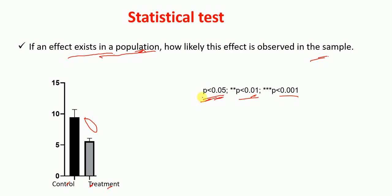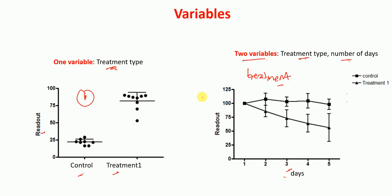Next I'm going to talk about variables. There are one-variable and two-variable scenarios. In this example of one variable, we have a control group and a treatment group — the only variable here is the treatment type. In the two-variable graph, there are two variables: treatment type and number of days. So two things are varying — treatment type and number of days — whereas with one variable only one parameter varies, which is the treatment type.